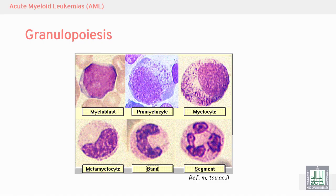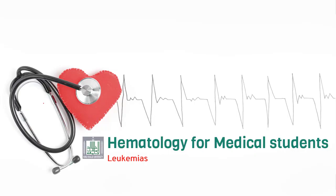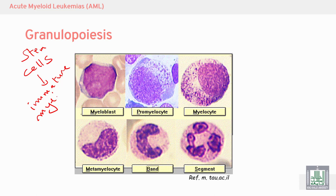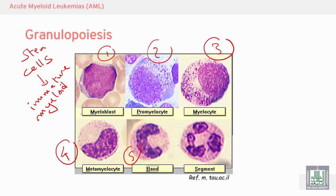Acute myeloid leukemia will start by granulopoiesis. Granulopoiesis starts from a stem cell, then immature myeloid. This immature myeloid starts with myeloblast, then pro-myelocyte, myelocyte, metamyelocyte, band, and finally after the band it will go to neutrophil segment — mature white blood cells, mature granulocytes.